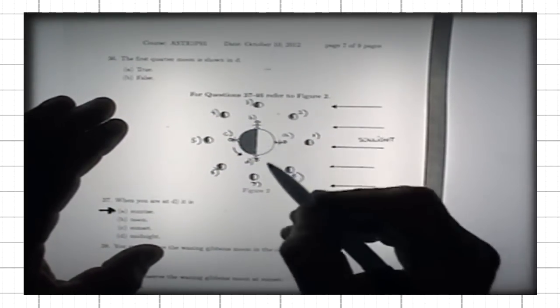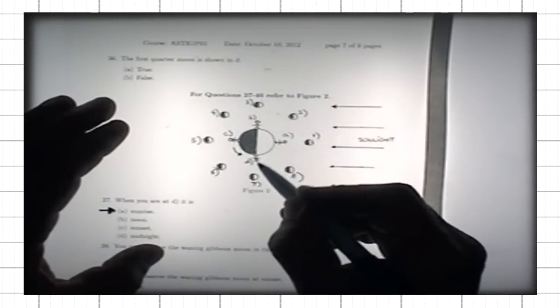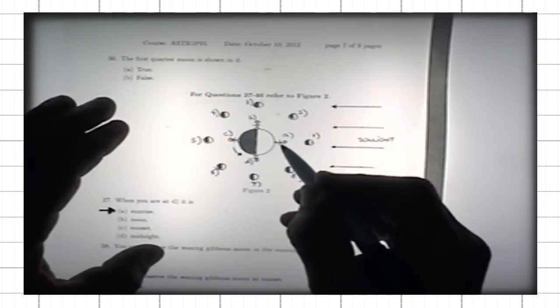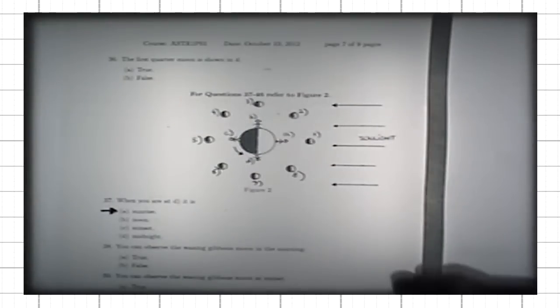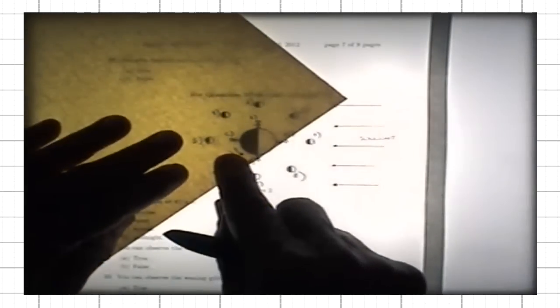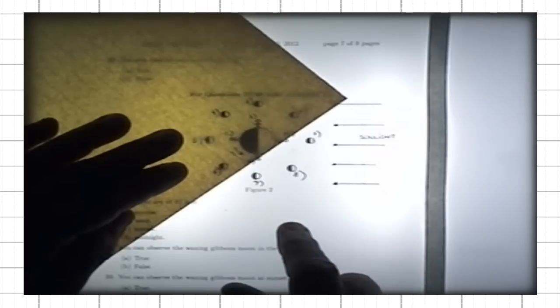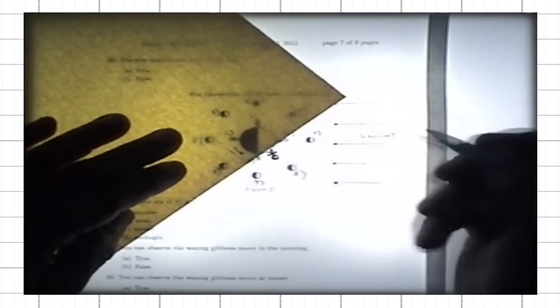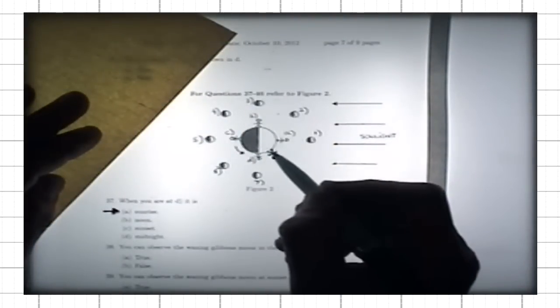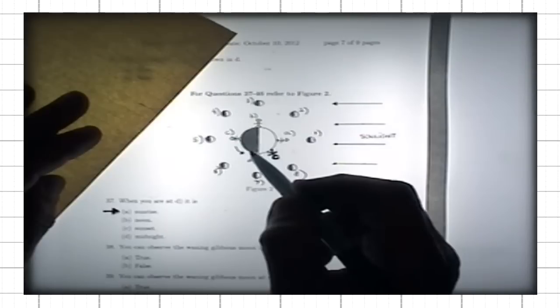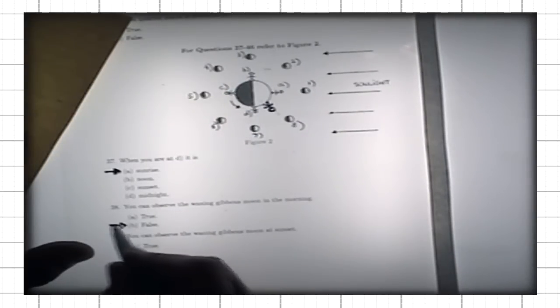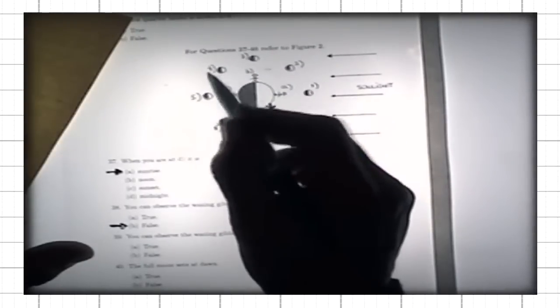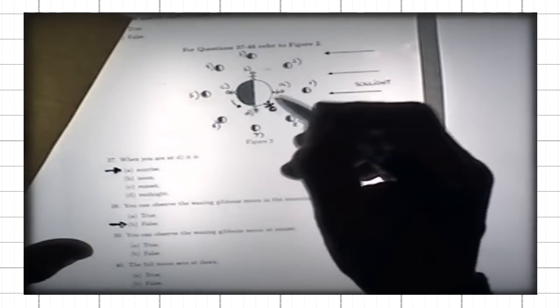Where are you in the morning? The morning corresponds to the interval between sunrise and noon. A typical position in the morning places you here, with your horizon below which you cannot see. In the morning, you cannot see the waxing gibbous moon because the Earth is between you and the moon — it is below your horizon. This statement is false.